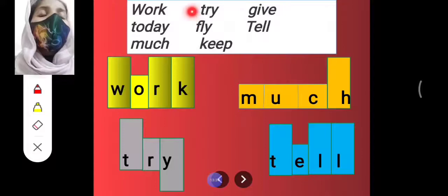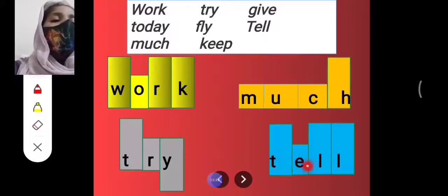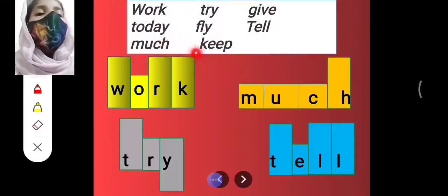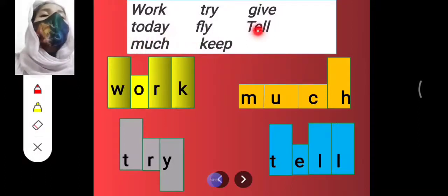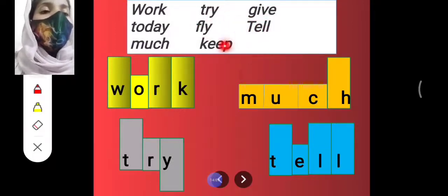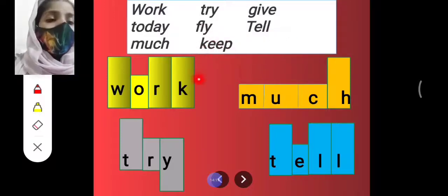Next we have 'try' — write 'try.' Next we have four-letter spaces. Our words so far: work, try, give, today, fly, keep, much, tell. From these, we match 'fly' and 'keep' to the next boxes. Next move to 'tell' — T, E, L, L. Then 'fly' goes here.